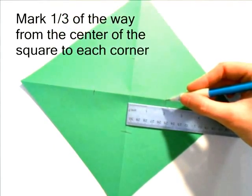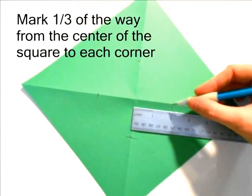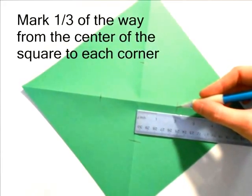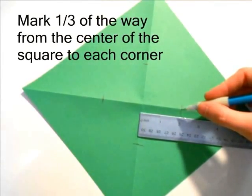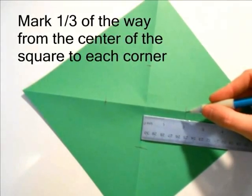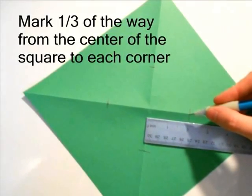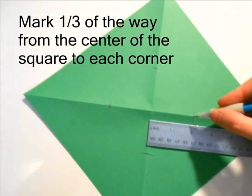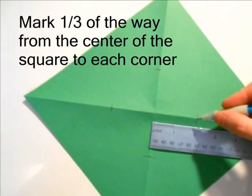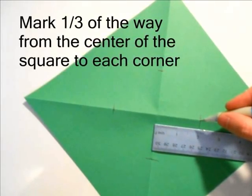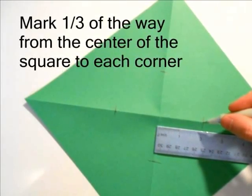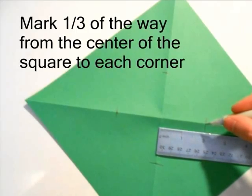The next step is to measure from the center of the square out to the corners. This square was pretty easy. It was 6 inches from the center of the square where the creases meet out to the corners. Then what you want to do is make a mark 1 third of the way out to the corner. So all I had to do, if you see the pencil marks here, they're 2 inches away from the center.